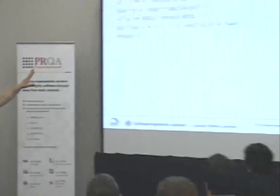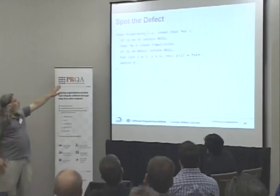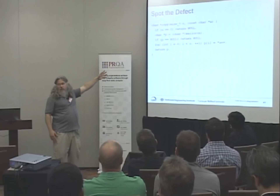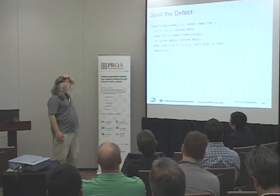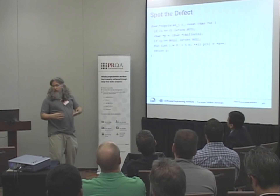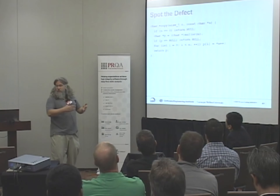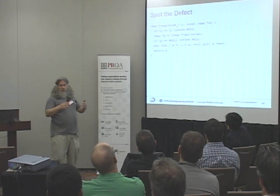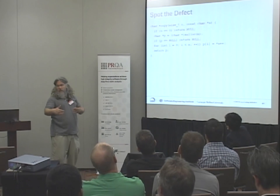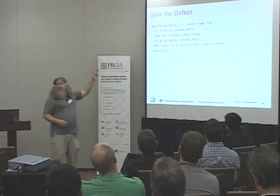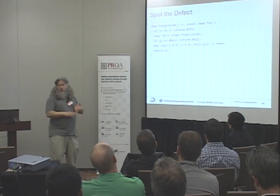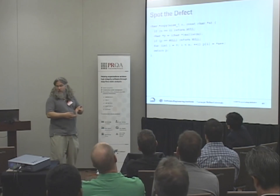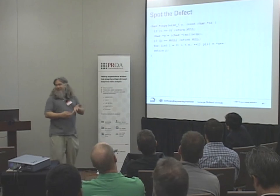I'll give you the answer. So, we're passing — this is a very typical signature for a function that takes a string, because strings are implemented as arrays, and when you pass an array to a function there's no way to know the size of the array. Any array you pass decays to a pointer to the first element. So you don't know the size, so you always have to provide a size. The correct and appropriate way to specify a size in C and C++ is a size_t.